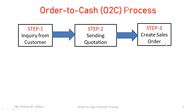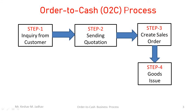After creating the sales order, the production department will produce the finished goods and send them to inventory or the warehouse. Before the shipping date, the warehouse team will start picking and packing the products for shipping. On the shipping date, goods will be issued to the customer or shipping party. Picking, packing, and post goods issue are shipping-related activities.